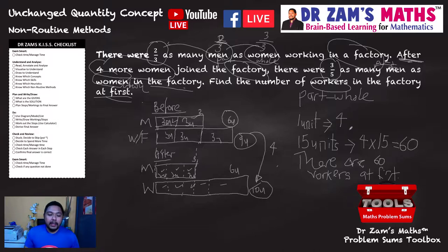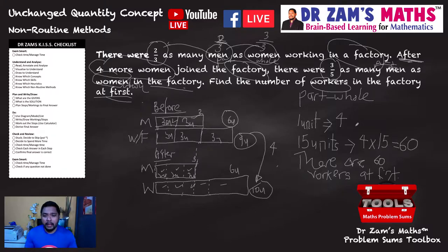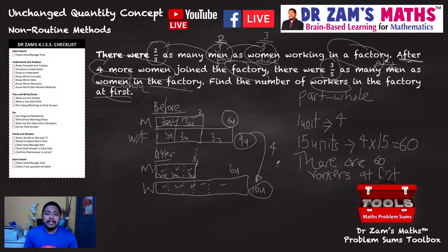There is no single best way to do a problem sum — the best way is the one where you can get it in the shortest time and get it right. Don't force yourself to use someone else's method. Just learn the problem sum strategies you can use easily and solve as many problems as you can. This kind of question is typically worth four marks, and workings also carry marks — the final answer is one mark, with the rest being two marks.